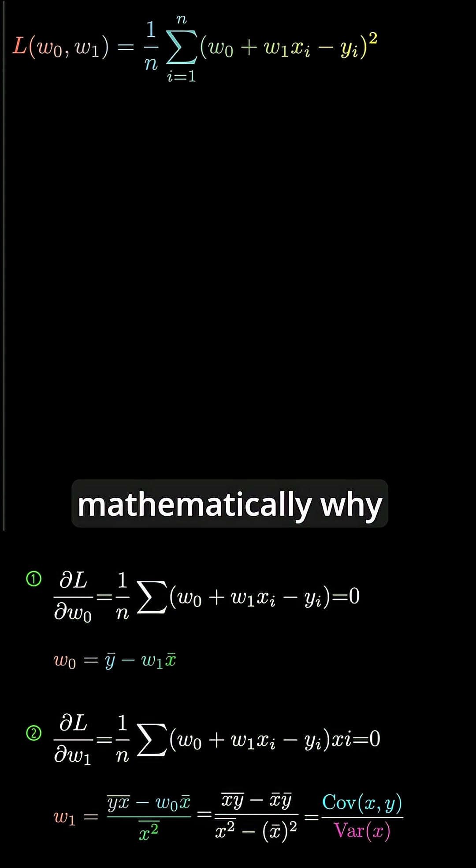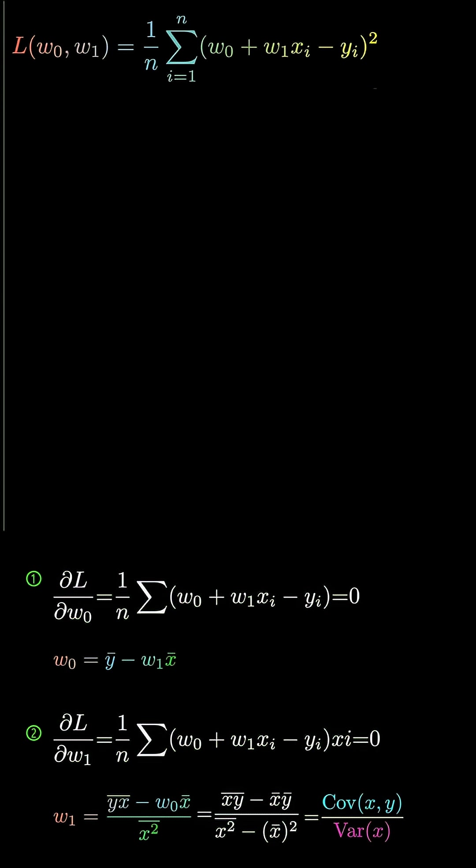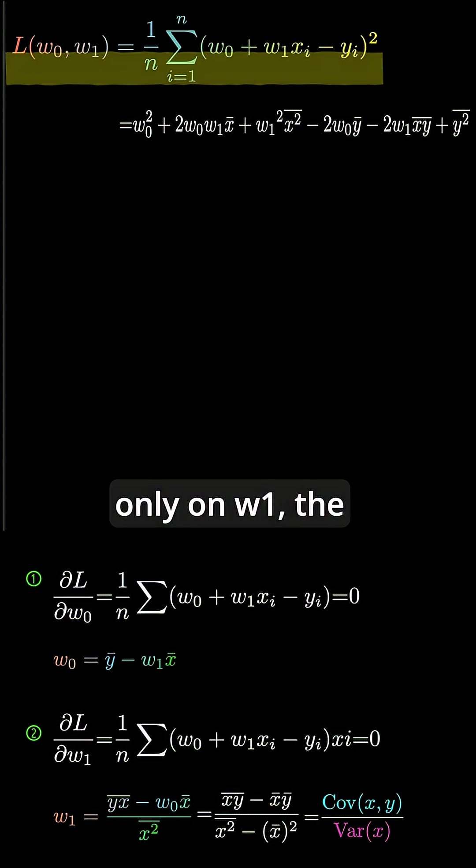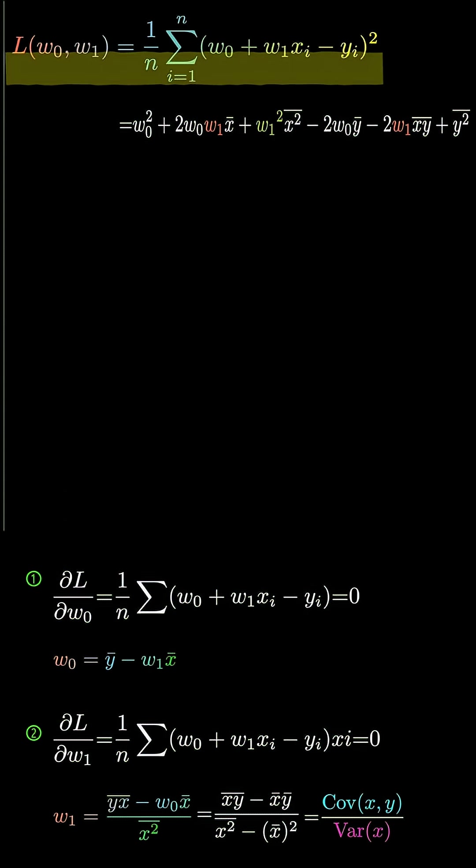Finally, let's see mathematically why the loss function L has a bowl shape. If we expand the equation and focus only on w1, the coefficient of the highest degree term w1 squared is the mean of x squared.